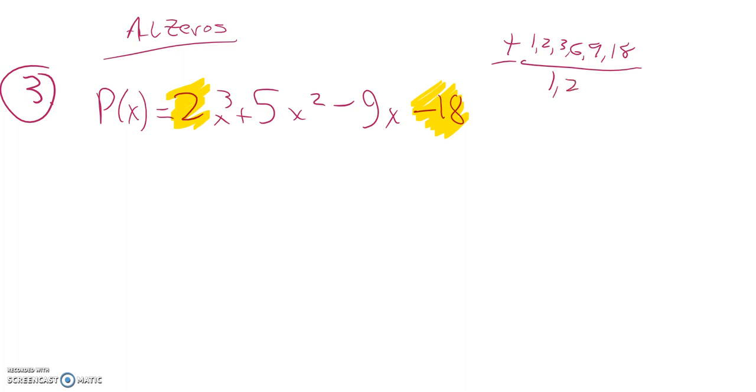So any combinations like 9 halves or 3 halves, 18 over 1, negative 6 over 1, those are all possible real zeros. If I have a real zero, it will be one of these possibilities.